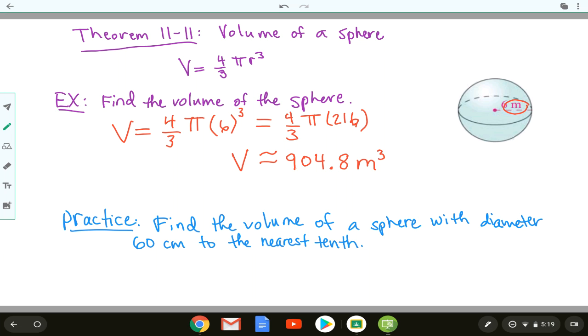Now try this practice problem. Find the volume of a sphere with a diameter of 60 centimeters to the nearest tenth. We could have left our answer in terms of π by multiplying 216 times 4 and then dividing by 3 but leaving π in our answer. But in this practice problem you're asked to do it to the nearest tenth. Hopefully you saw that we were given that diameter instead of the radius. So my radius will be 60 divided by 2. So it's going to be 30 centimeters.